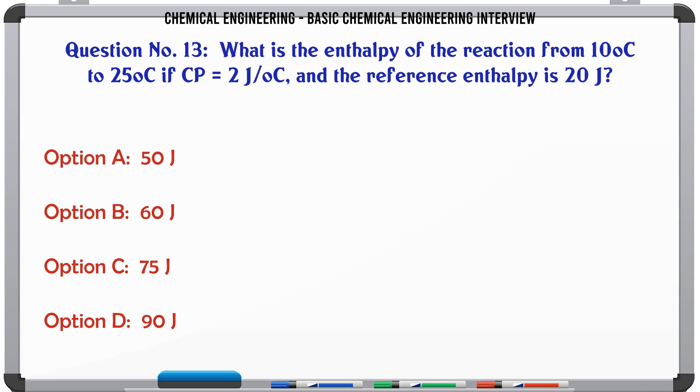What is the enthalpy of the reaction from 10°C to 25°C if Cp = 2 J/°C and the reference enthalpy is 20 J? A) 80 J. B) 120 J. C) 16 J. D) 200 J.